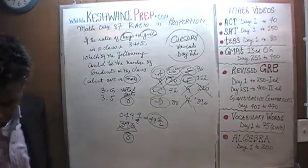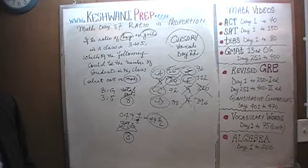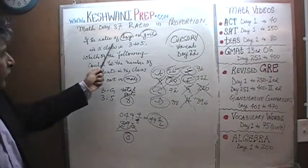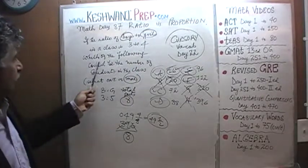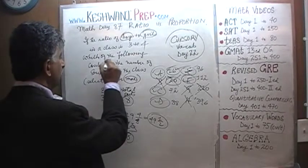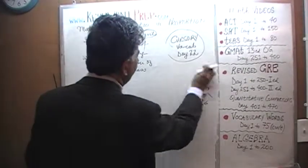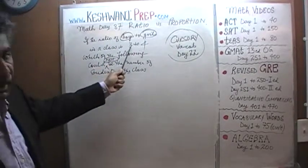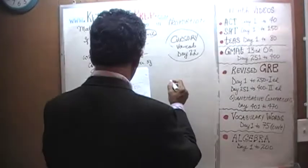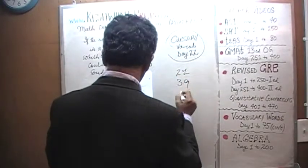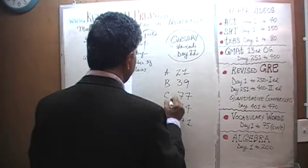Let us do one more. The new question: we are told that the ratio of boys to girls is 3 to 4. The question is which of the following could NOT be the number of students in the class? The answer choices are: A) 21, B) 39, C) 77, D) 84, and E) 91.